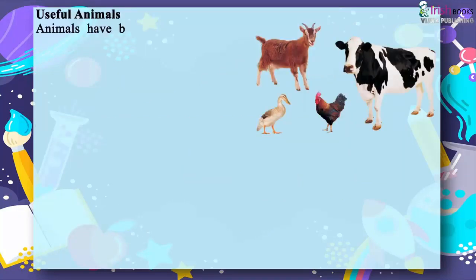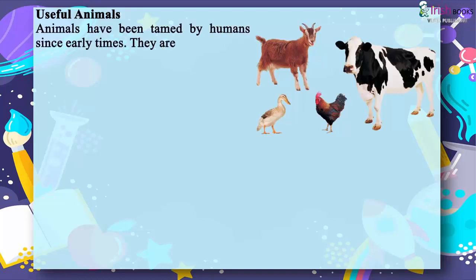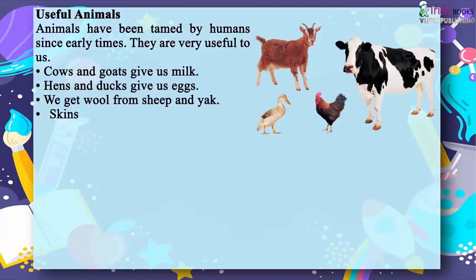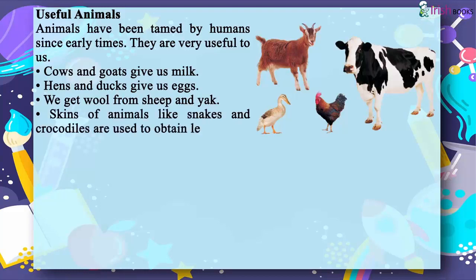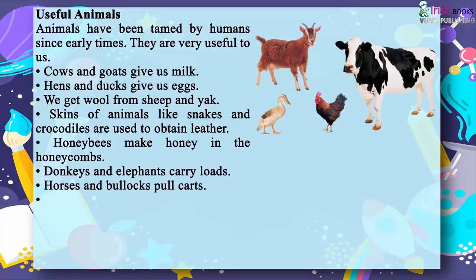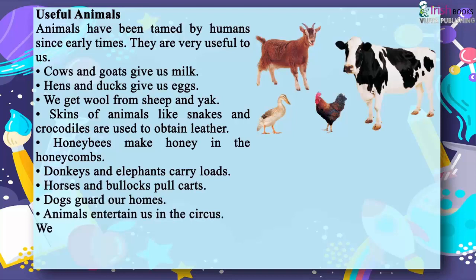Useful animals. Animals have been tamed by humans since early times and are very useful to us. Cows and goats give us milk. Hens and ducks give us eggs. We get wool from sheep and yak. Skins of animals like snakes and crocodiles are used to obtain leather. Honey bees make honey in honeycombs. Donkeys and elephants carry loads. Horses and bullocks pull carts. Dogs guard our homes.